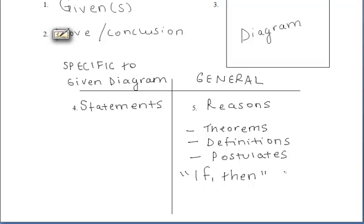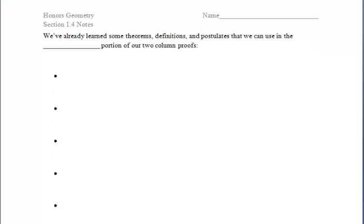On the next page, we are going to write out a bunch of reasons that we've already discussed indirectly. Some of them will be new, some we've already seen. But on this next page, we will be focusing on reasons that we can write in the right-hand column of our proofs.